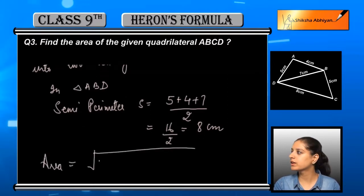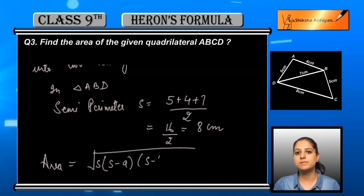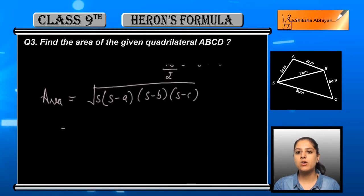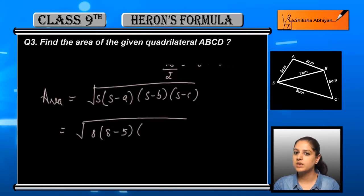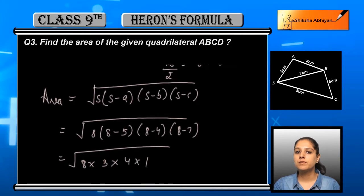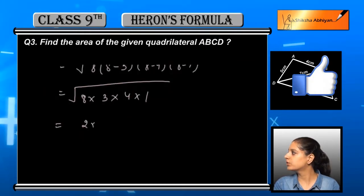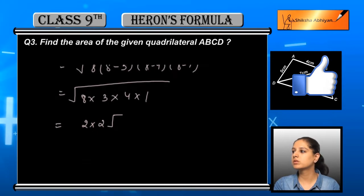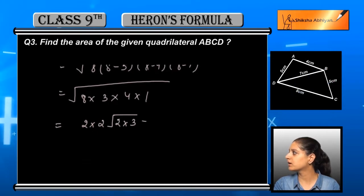Now we will apply Heron's formula, that is under root of s into s minus a into s minus b into s minus c. The four values s, a, b, and c we will put in this formula: s is equal to 8, a is 5, b is 4, and c is 7. After putting all values and subtracting, we get 8 into 3 into 4 into 1. After taking the square root, we get 2 into 2 under root 2 into 3.